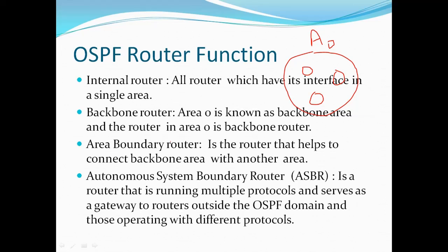Next we have the area boundary router (ABR). An area boundary router is the router that helps connect the backbone area with another area. For example, if we have area 0 and area 1, the router connecting them is the area boundary router. The rest of the routers are connected to each other inside their respective areas.